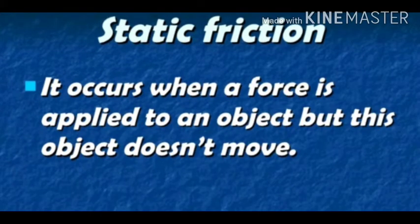Static friction occurs when a force is applied to an object but the object does not move. This type of friction acts when the object is at rest. When any object is kept on a horizontal surface, the frictional force keeping it at rest is called static friction, which acts against its motion. Because of static friction, the object remains at rest.